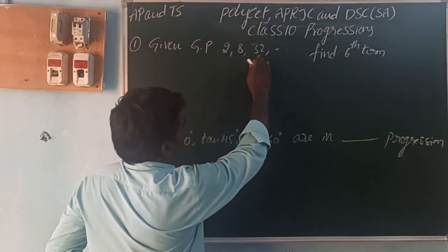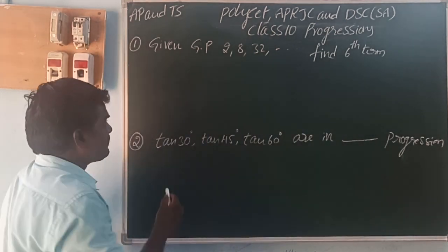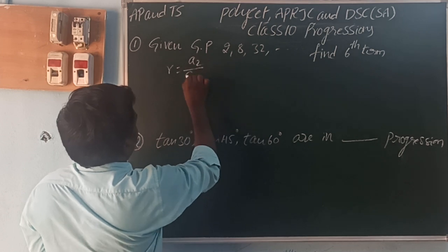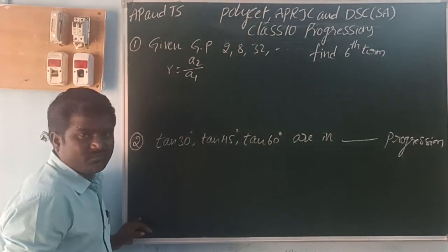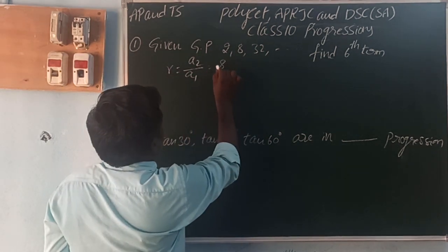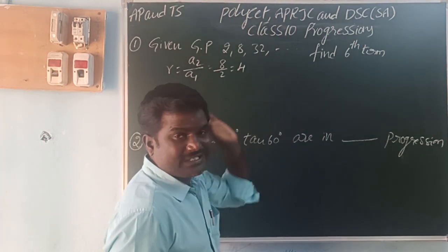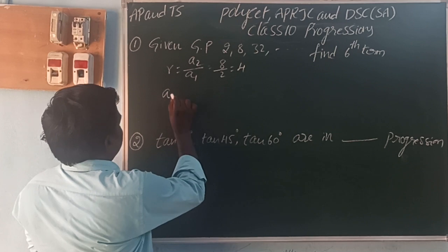So first term is 2, second term is 8, next 32 and so on. A2 by A1, that is the second term divided by first term. That is 8 by 2, that is 4. A3 by A2 is also 4.